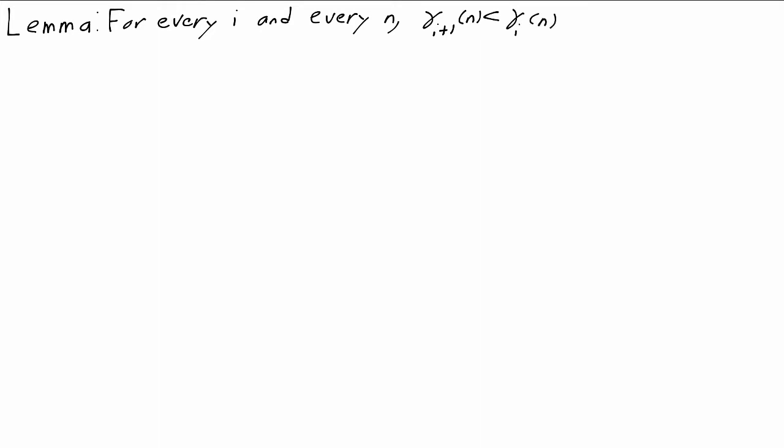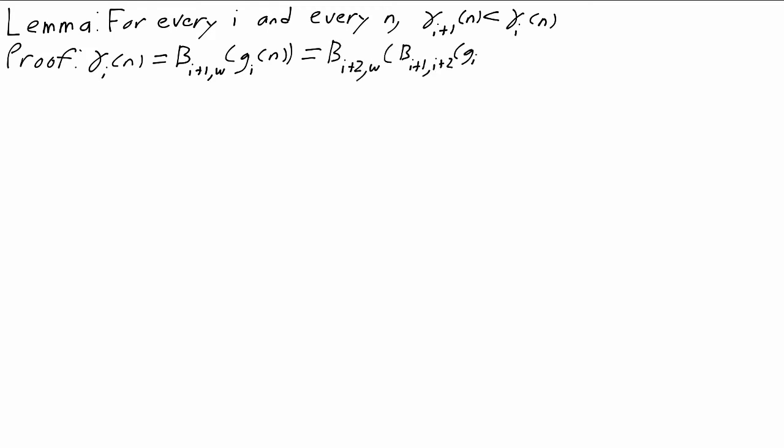If we can prove that for every i and every n, gamma_{i+1}(n) is less than gamma_i(n), we'll almost be done — these ordinals really are going to give a countdown. This mostly falls out of looking at the definition. By definition, gamma_i(n) is b_{i+1, omega}(g_i(n)), which is the same as b_{i+1, omega}(b_{i+1, i+2}(g_i(n))). The first says: take all the i+1s and turn them into omegas. The second says: take the i+1s, turn them into i+2s, and then turn the i+2s into omegas.